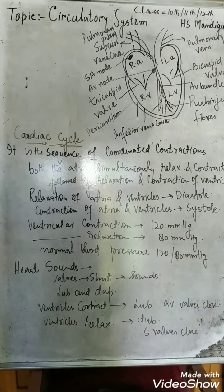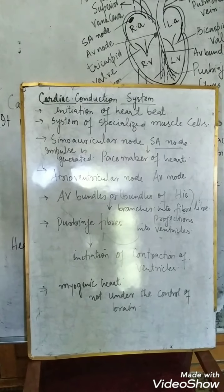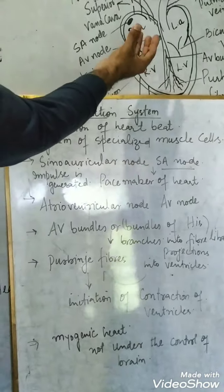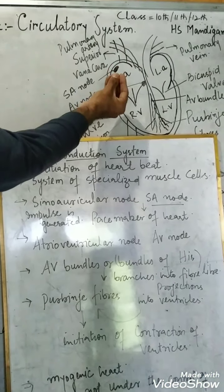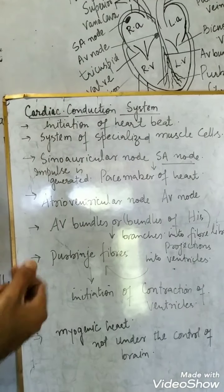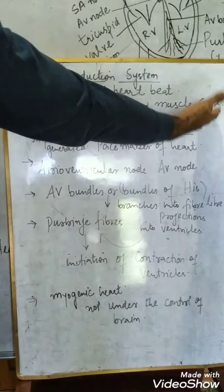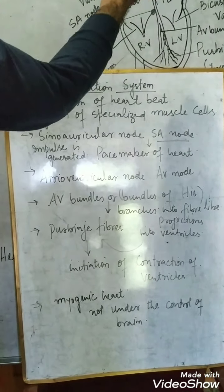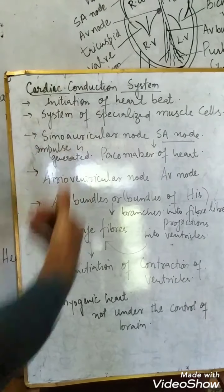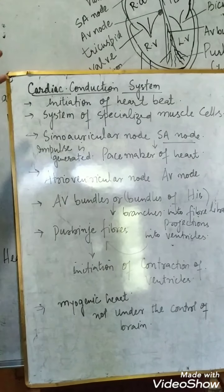Now I would like to continue with the cardiac conduction system — how the initiation of the heartbeat takes place. The cardiac conduction system is a system of specialized muscle cells present in our heart which initiate the heartbeat or the cardiac cycle. There are four types of specialized muscle cells in our heart.